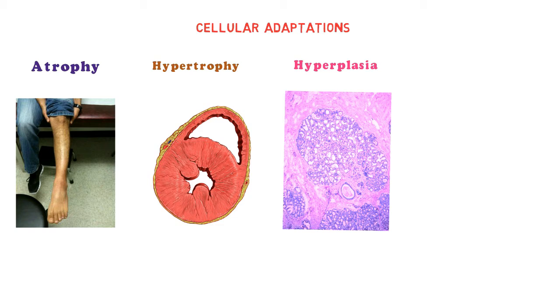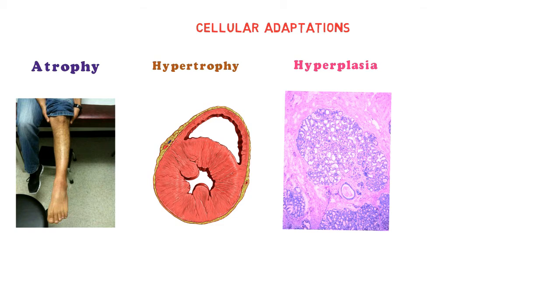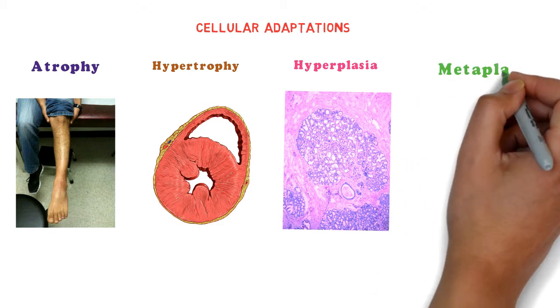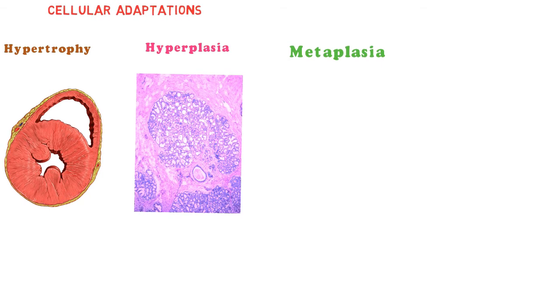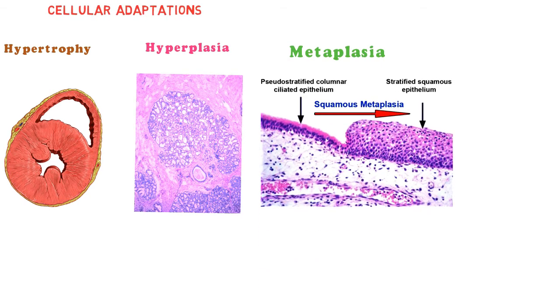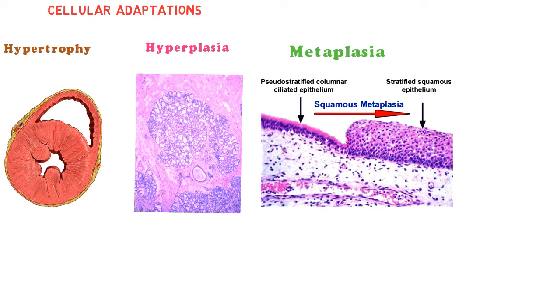Metaplasia is reversible change in which there is replacement of one mature or differentiated cell type by another mature cell type. For example, in case of smokers, columnar epithelium of the respiratory tract is replaced by relatively tough squamous epithelium to withstand the chronic harmful irritation caused by smoke.